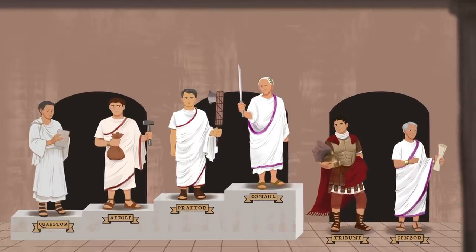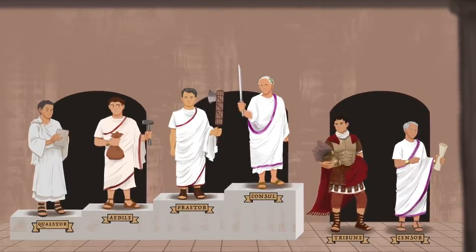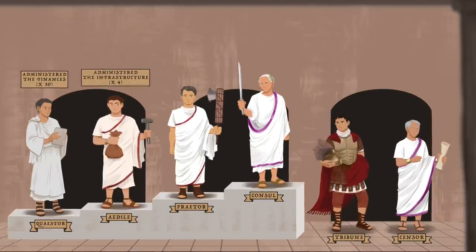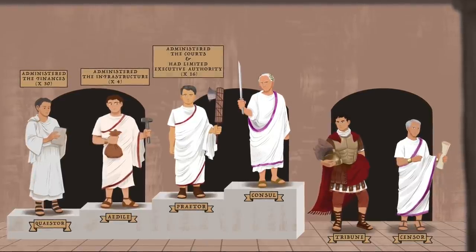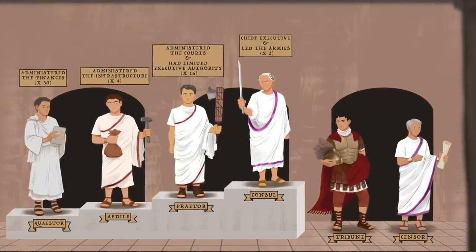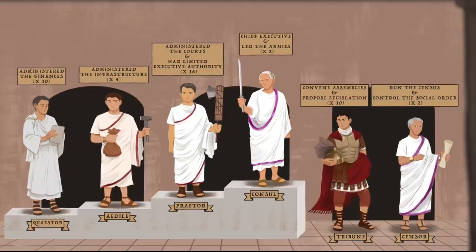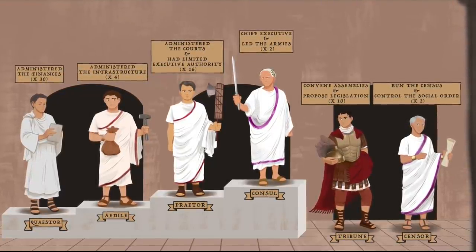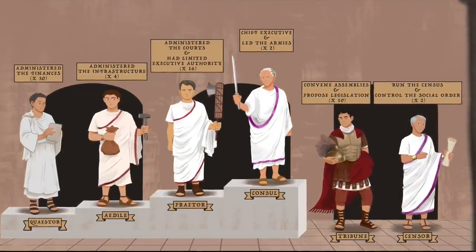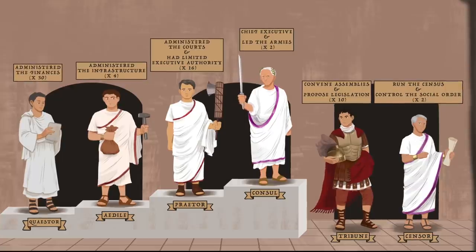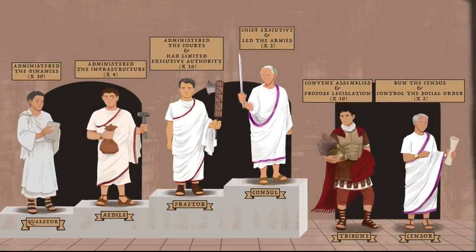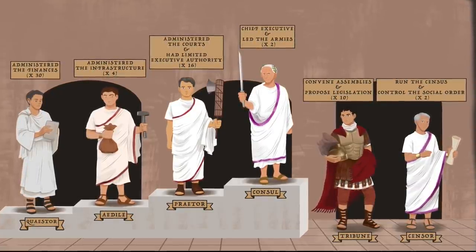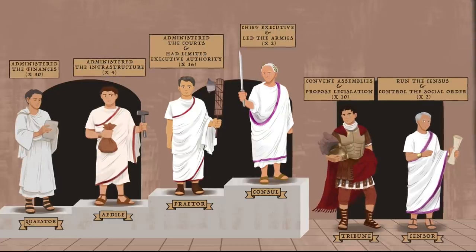All played important roles in the functioning of the Roman Republic. Each type had different requirements for eligibility, number of positions, and scope of responsibility, which would have changed over the centuries. Now that we've covered the main Roman officials, we can look at what it took to become one.